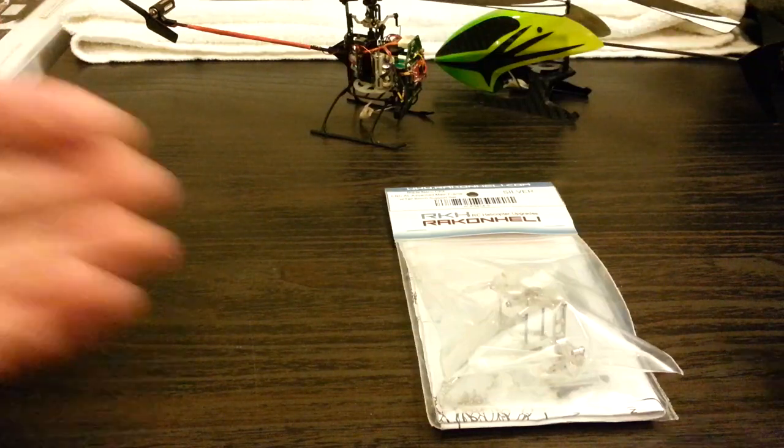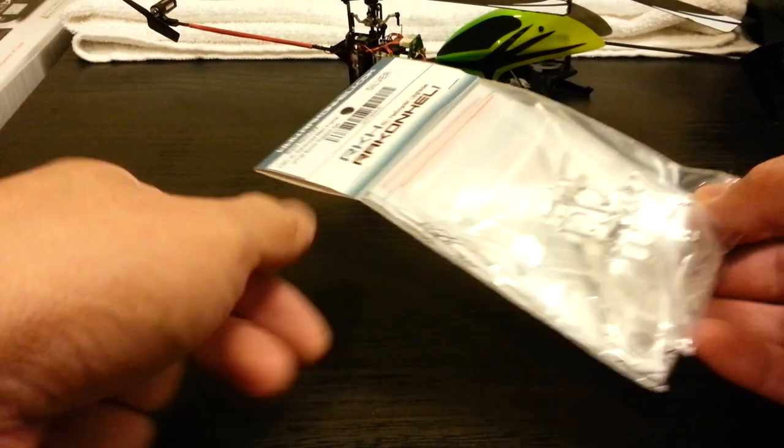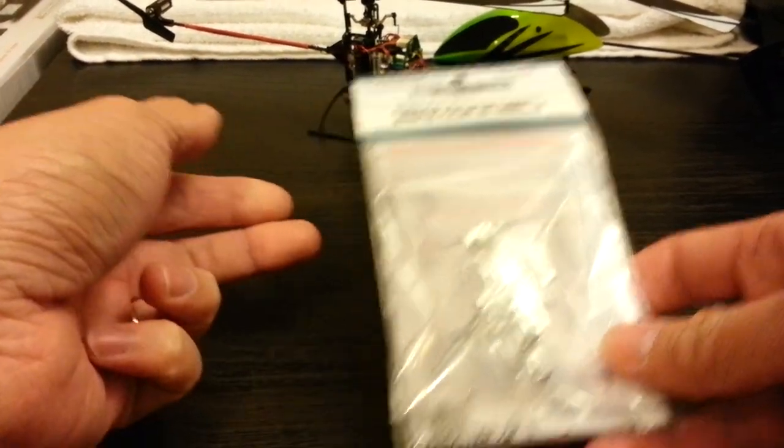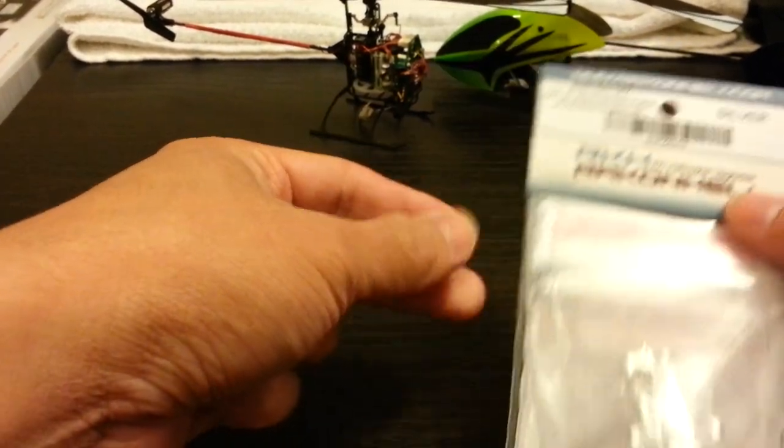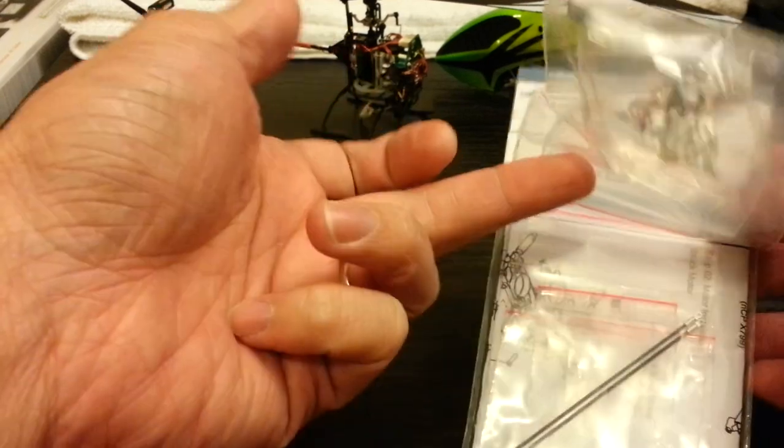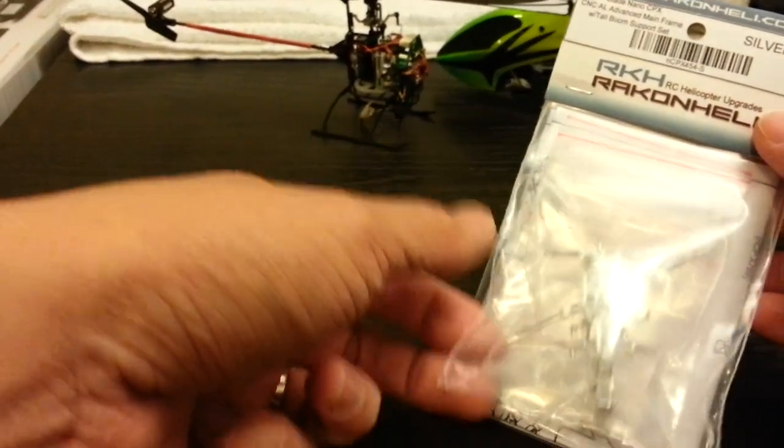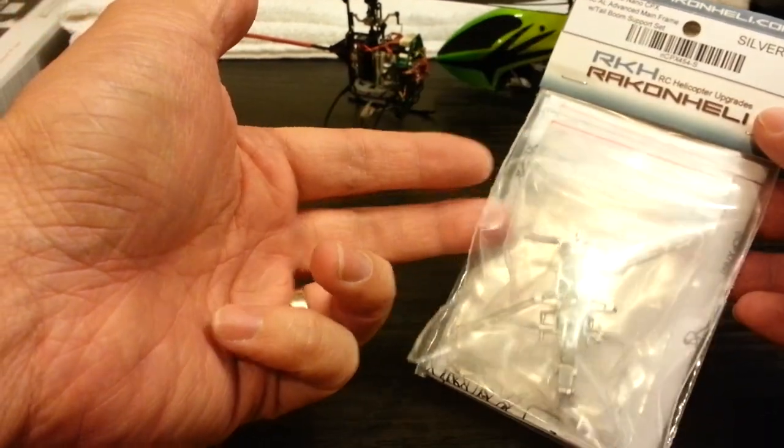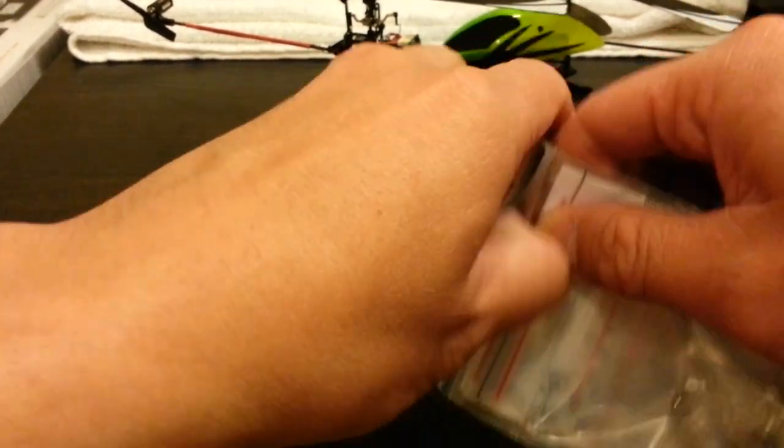Hey guys, here's a quick look at the new mainframe upgrade for the Nano CPX. I picked this up from RKH's Rackon Heli, ordered it directly from their website. This is their advanced mainframe with the optional tail boom support. Depending on what frame you get, you can get just a frame only or with the optional tail boom support which gives it that bigger look. Let me open it up and show you guys what's inside.